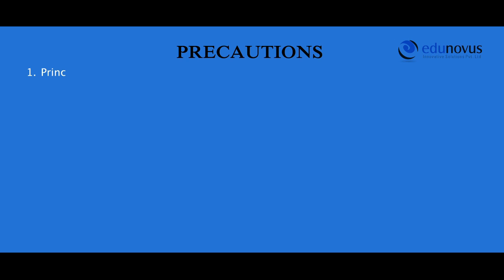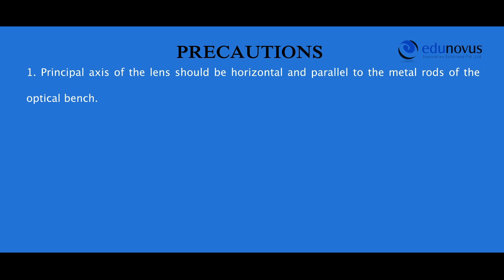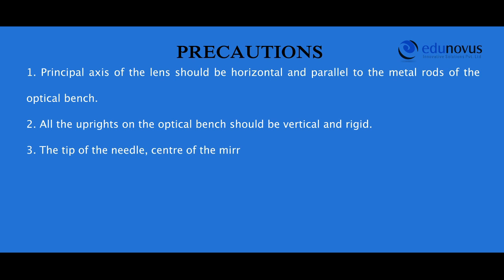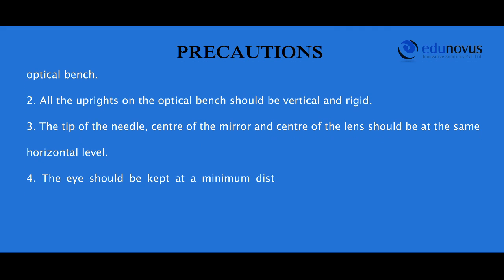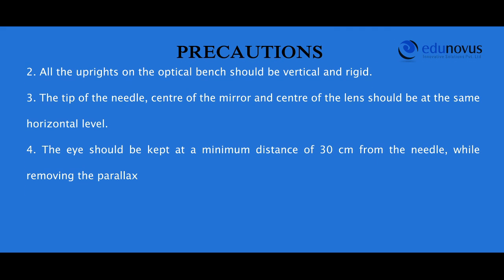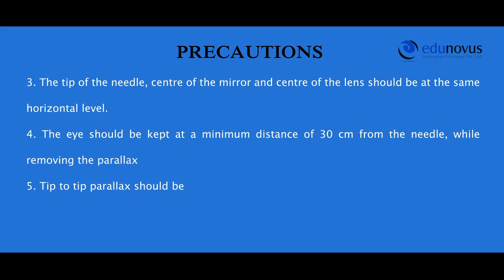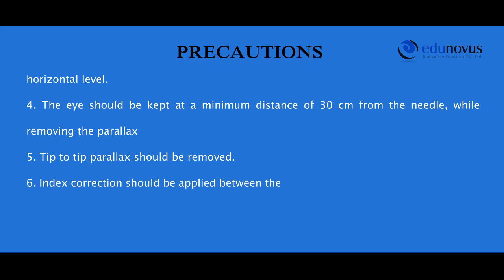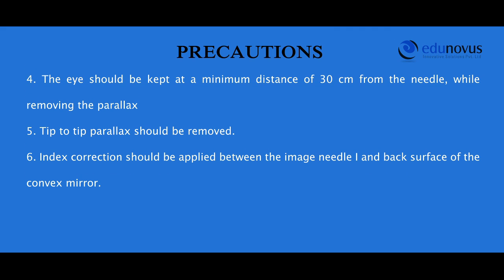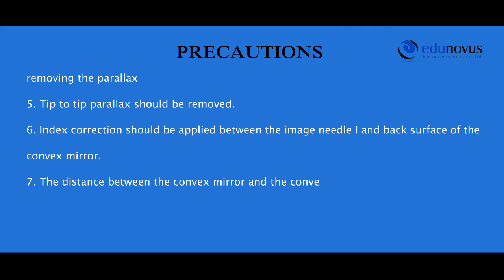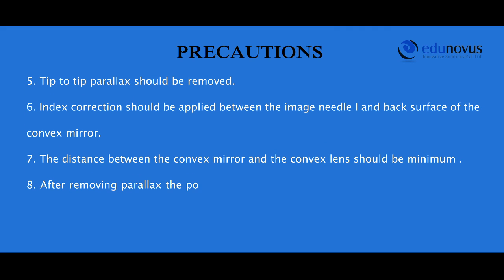Precautions: The principal axis of the lens should be horizontal and parallel to the metal rods of the optical bench. All uprights on the optical bench should be vertical and rigid. The tip of the needle, center of the mirror, and center of the lens should be at the same horizontal level. The eye should be kept at a minimum distance of 30 centimeters from the needle while removing parallax. Tip-to-tip parallax should be removed. Index correction should be applied between the image needle and the back surface of the convex mirror. The distance between the convex mirror and the convex lens should be minimum, and after removing parallax, the positions of the convex lens and object needle should not be changed.